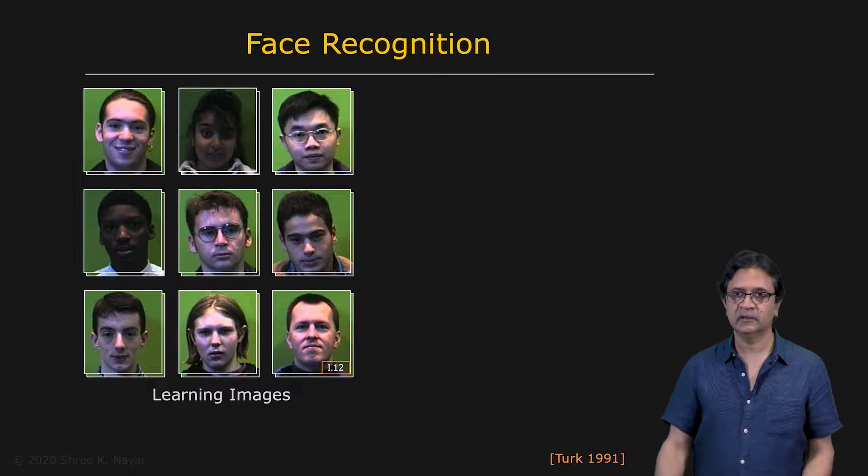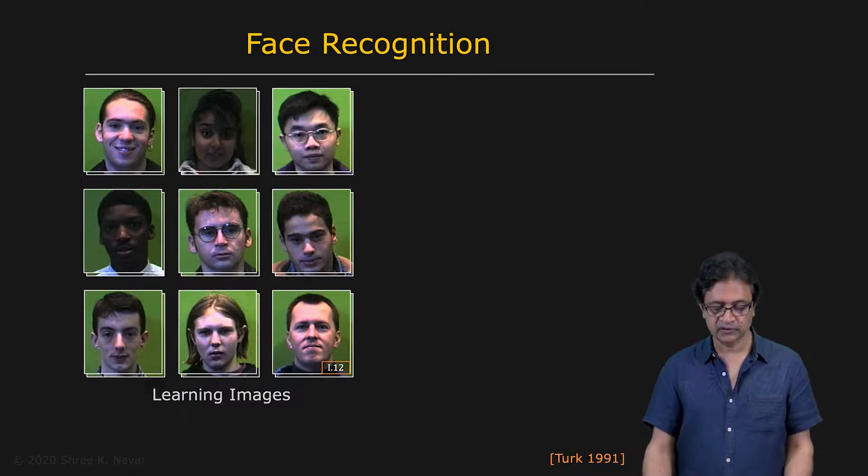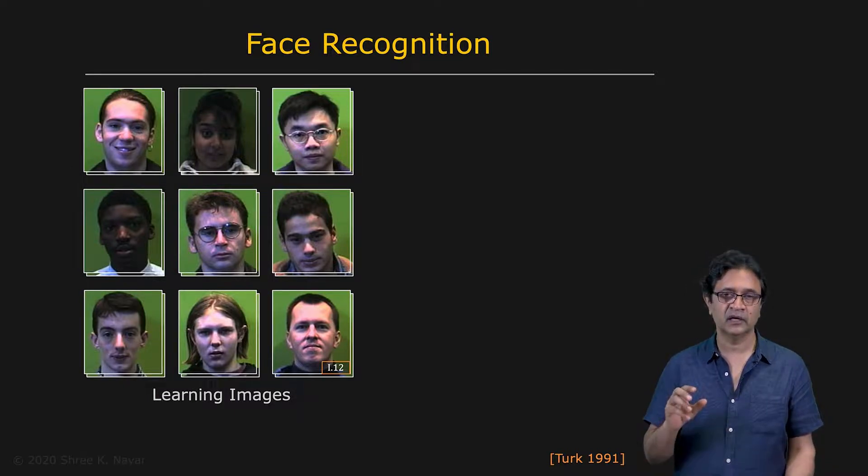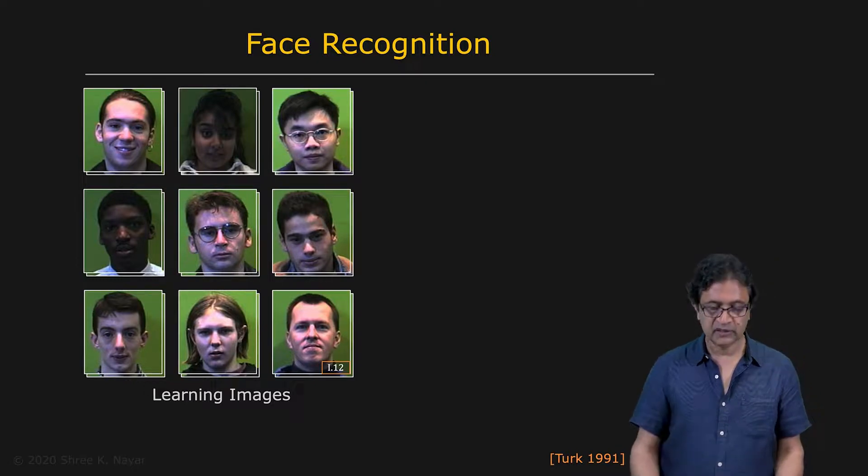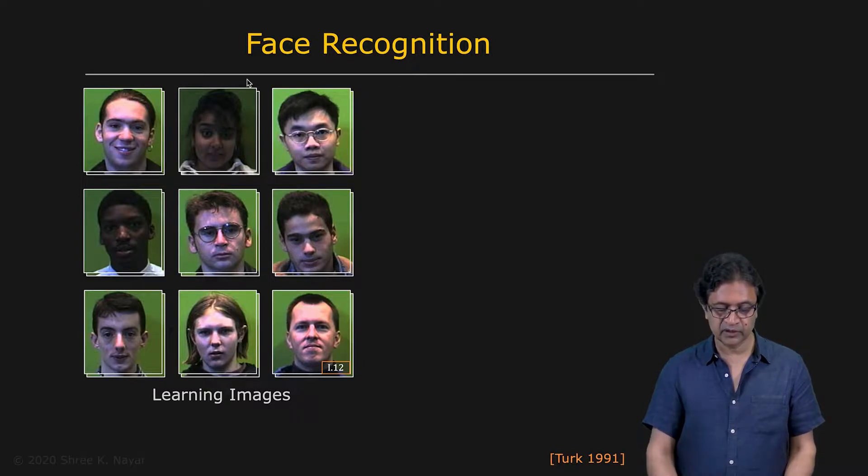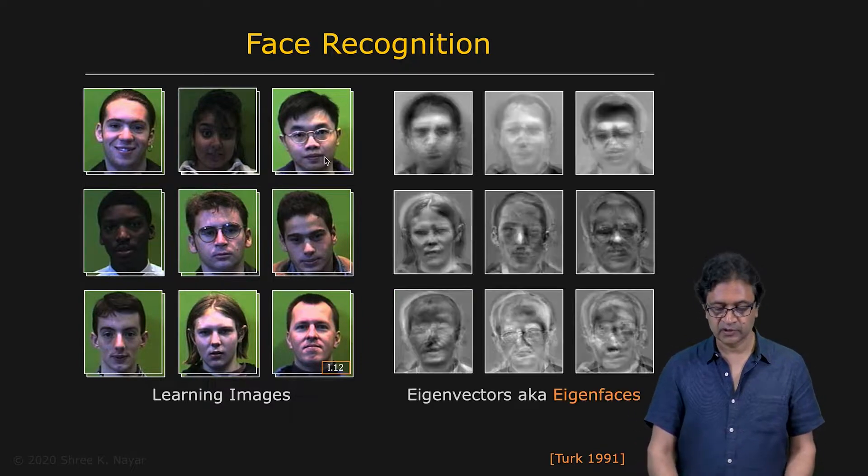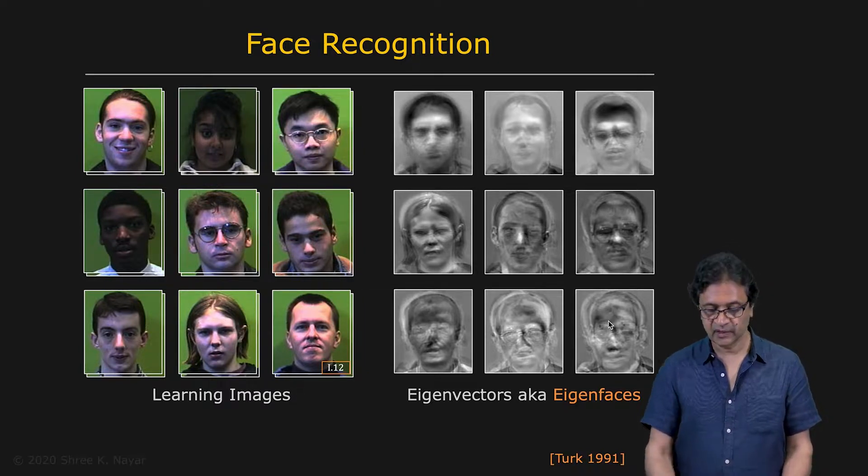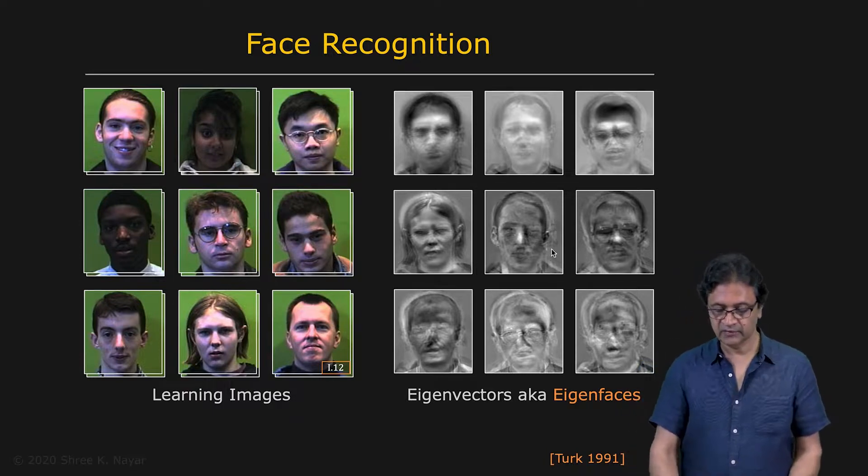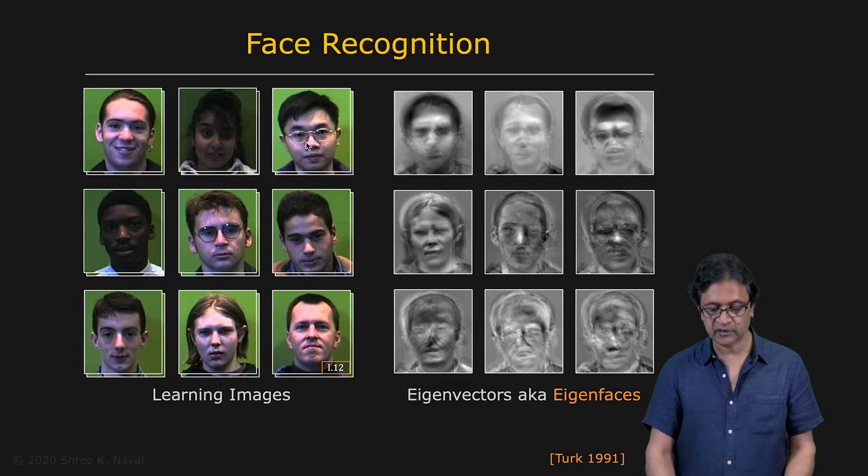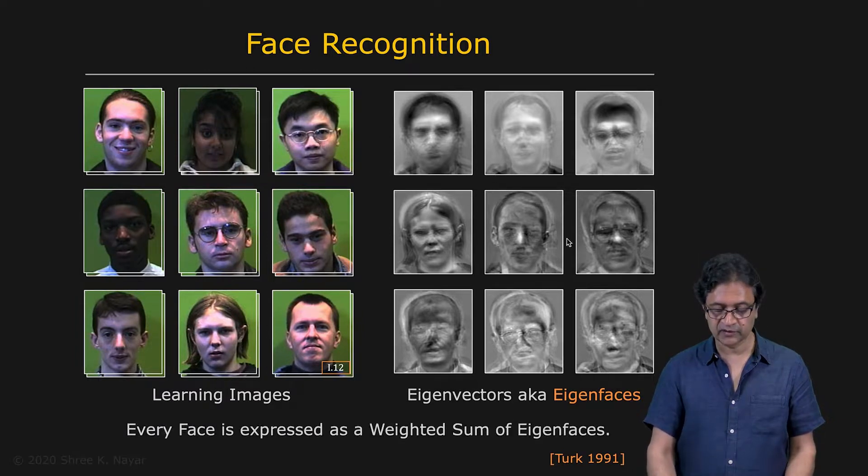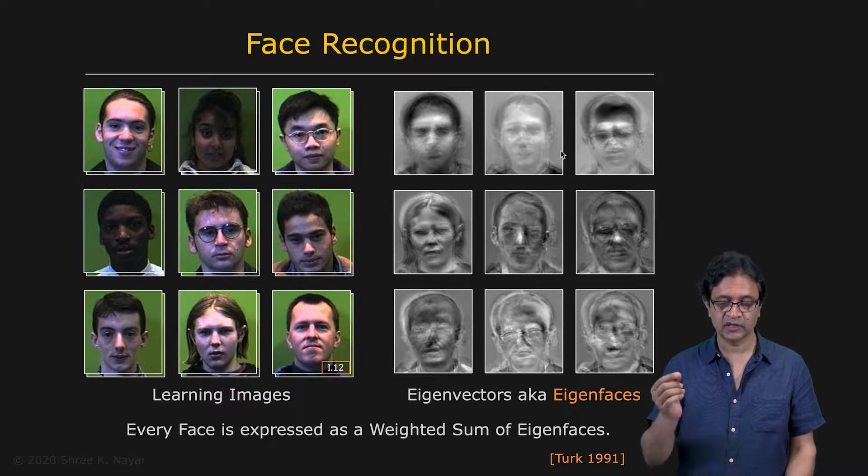And finally, there is the application of face recognition, which is a very important one. In fact, this is one of the earliest demonstrations of the use of an eigenspace for recognition by Turk and Pentland. So these are images and you take images of different people who are in your database. You take all of these images and you compute your principal components, which look like these. These are often referred to as eigenfaces. And now these eigenfaces, you can imagine each one of these images in the database can be expressed as a weighted sum of these eigenfaces. That's the representation of point in eigenspace.